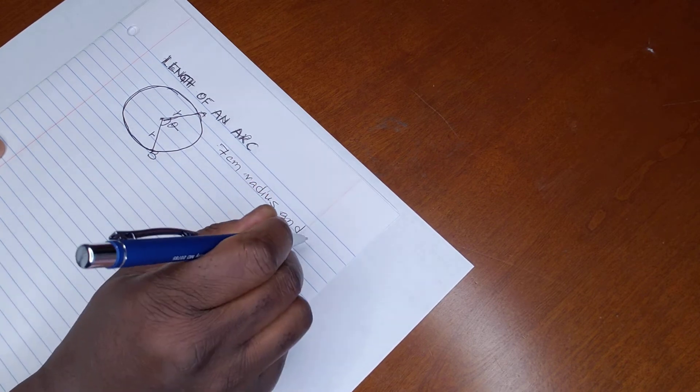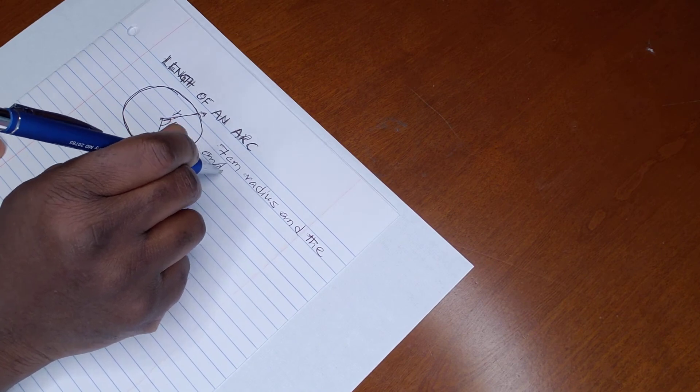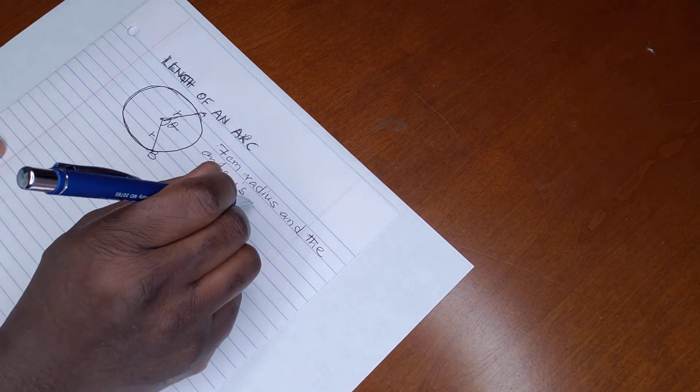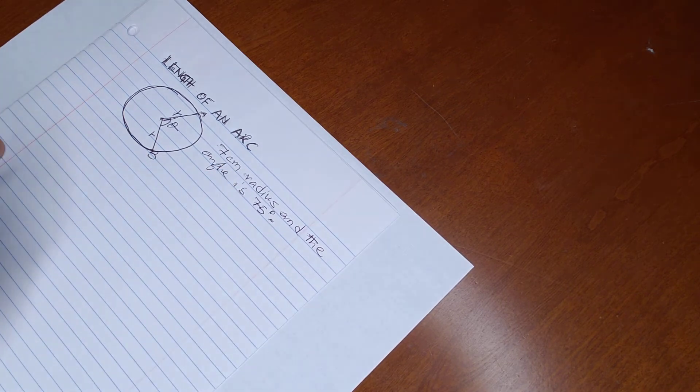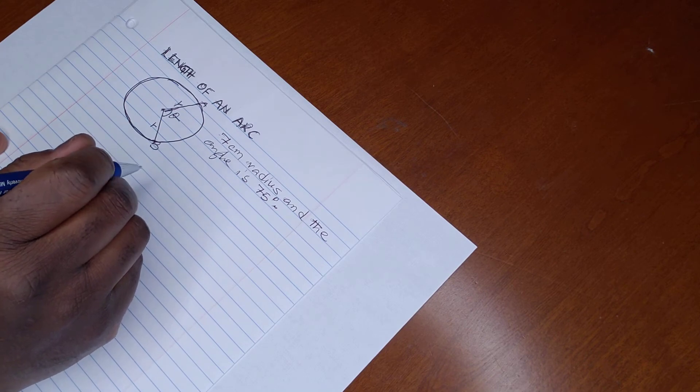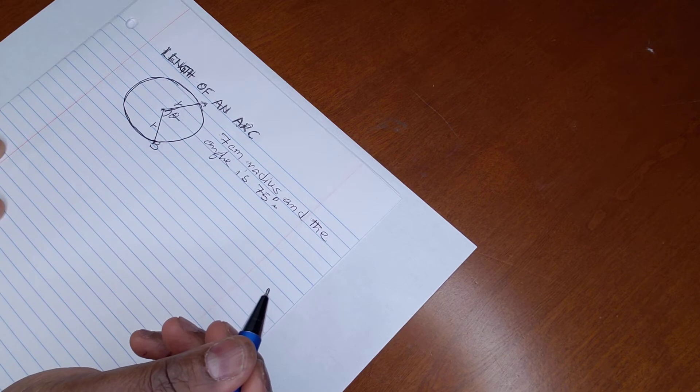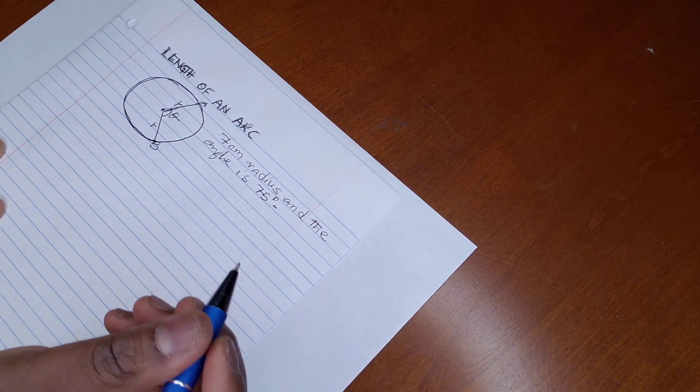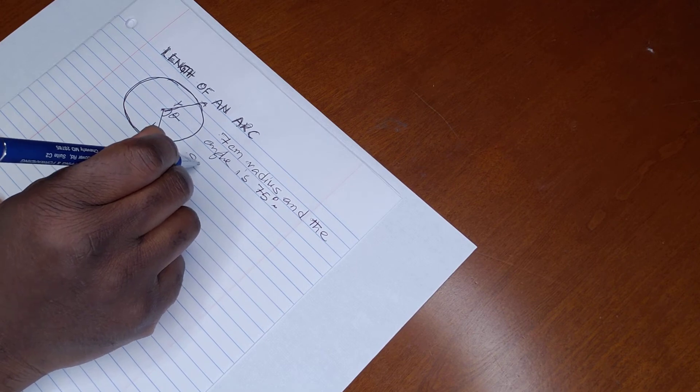In order to do this, we can write the relationship between the length of an arc and the circumference and the angle. So by writing the formula, we can say solution.